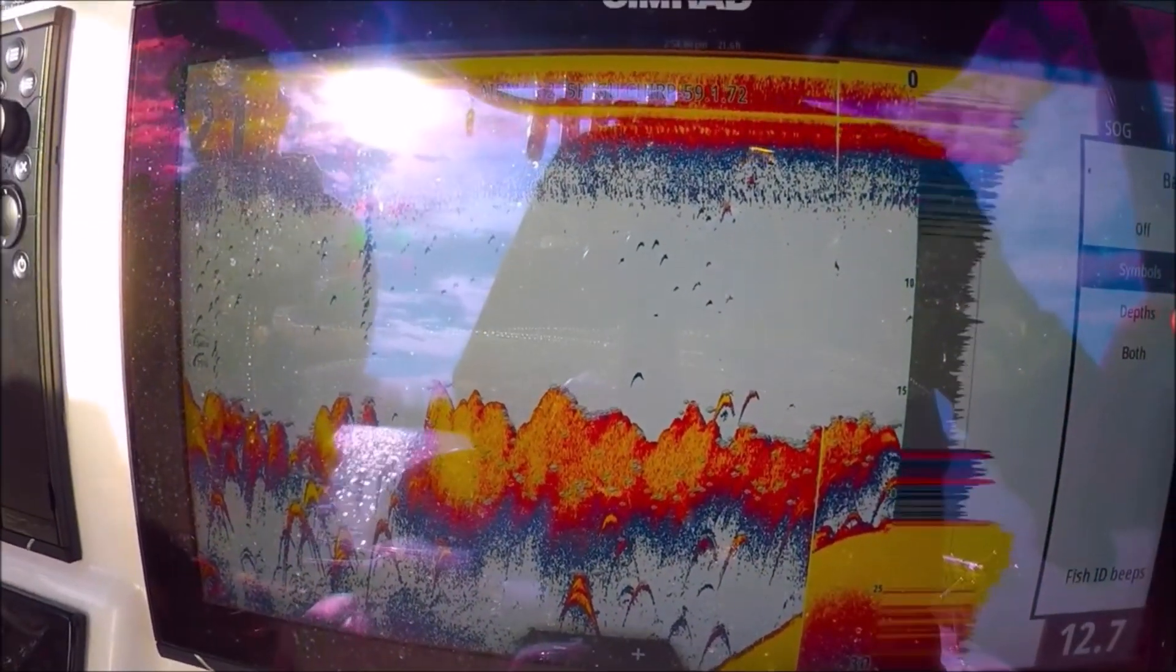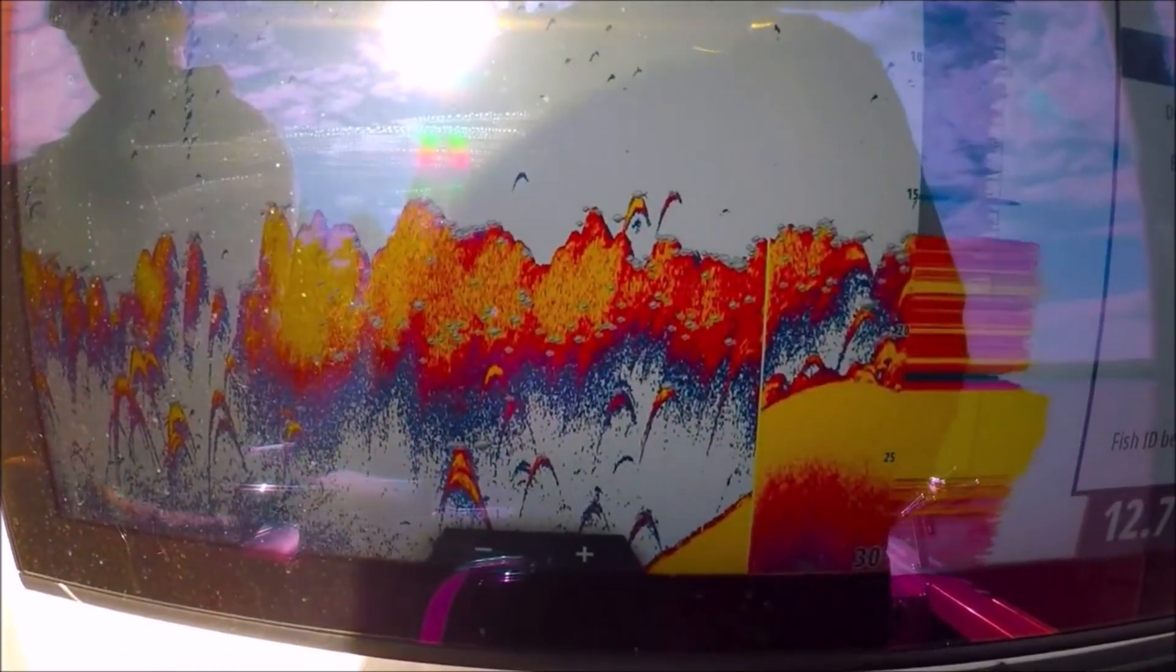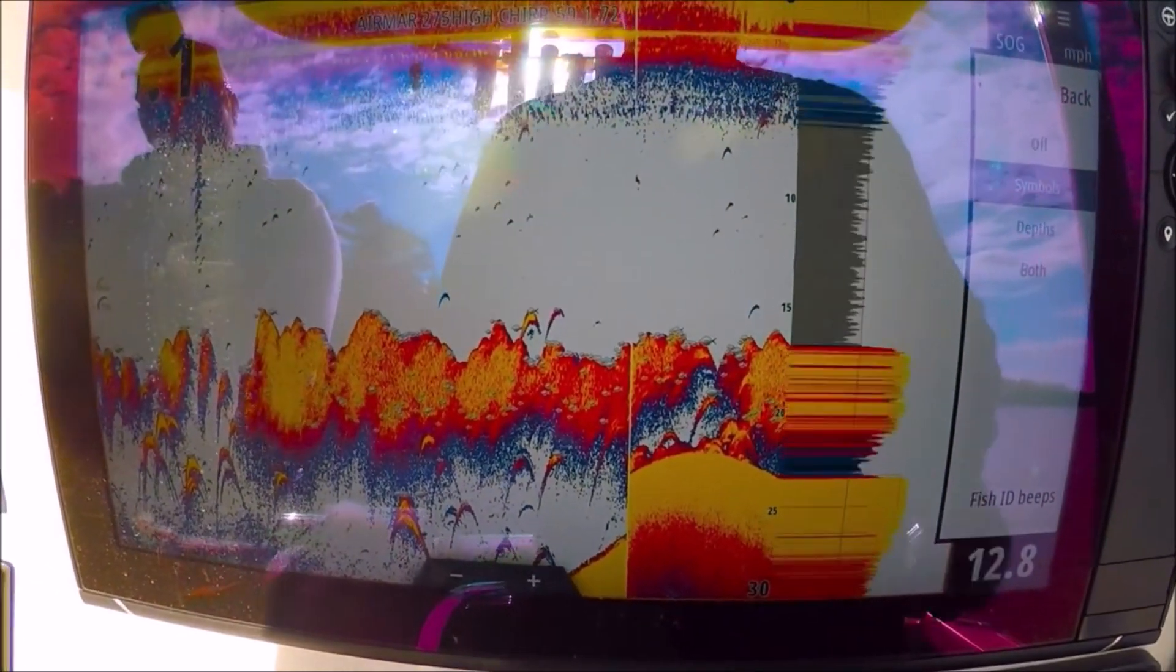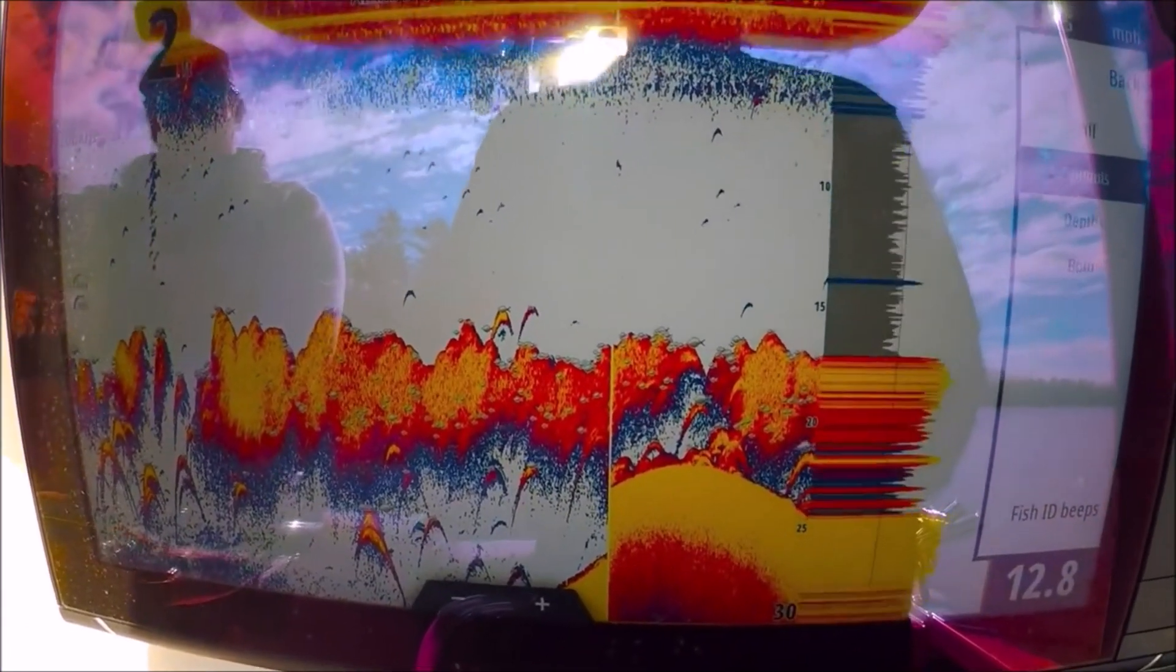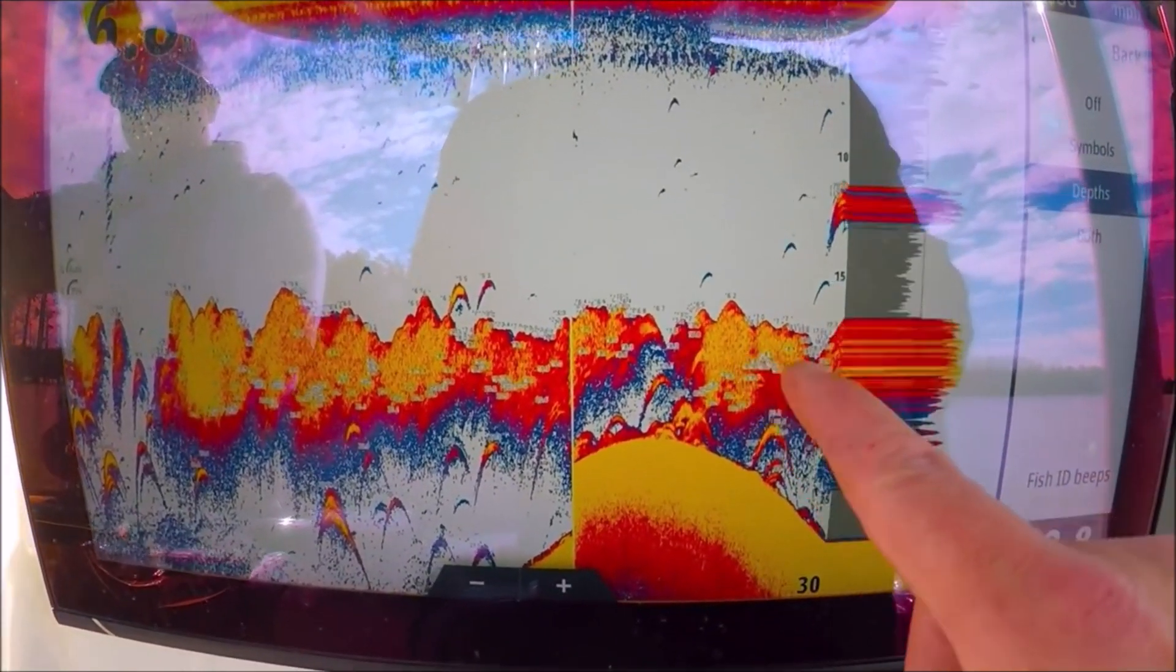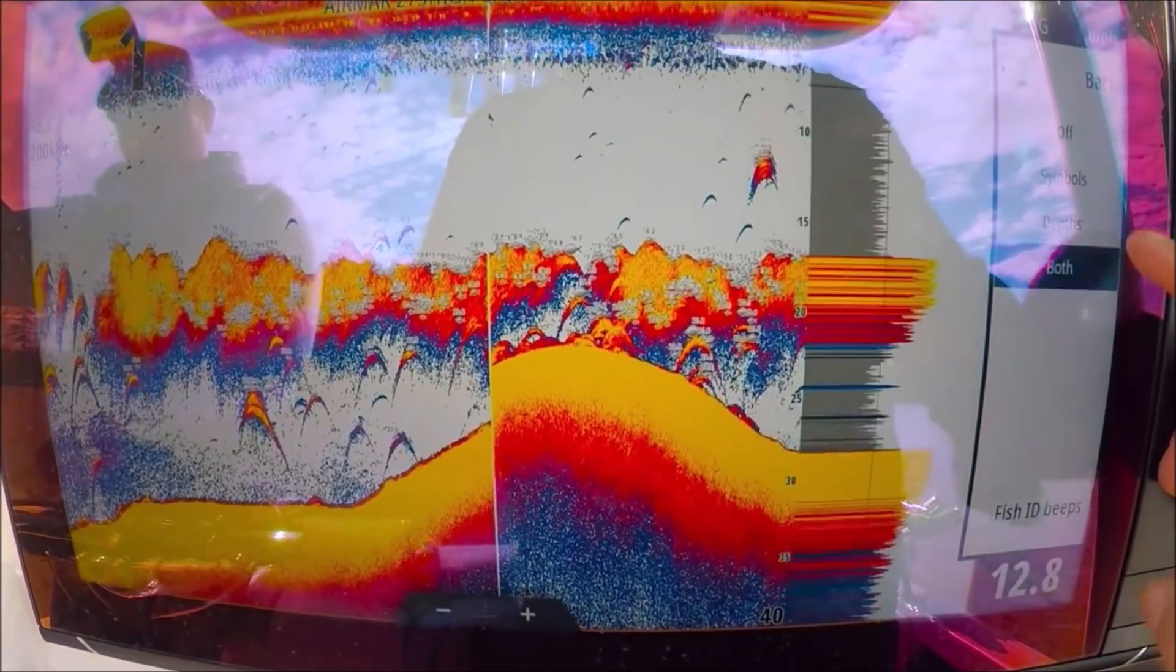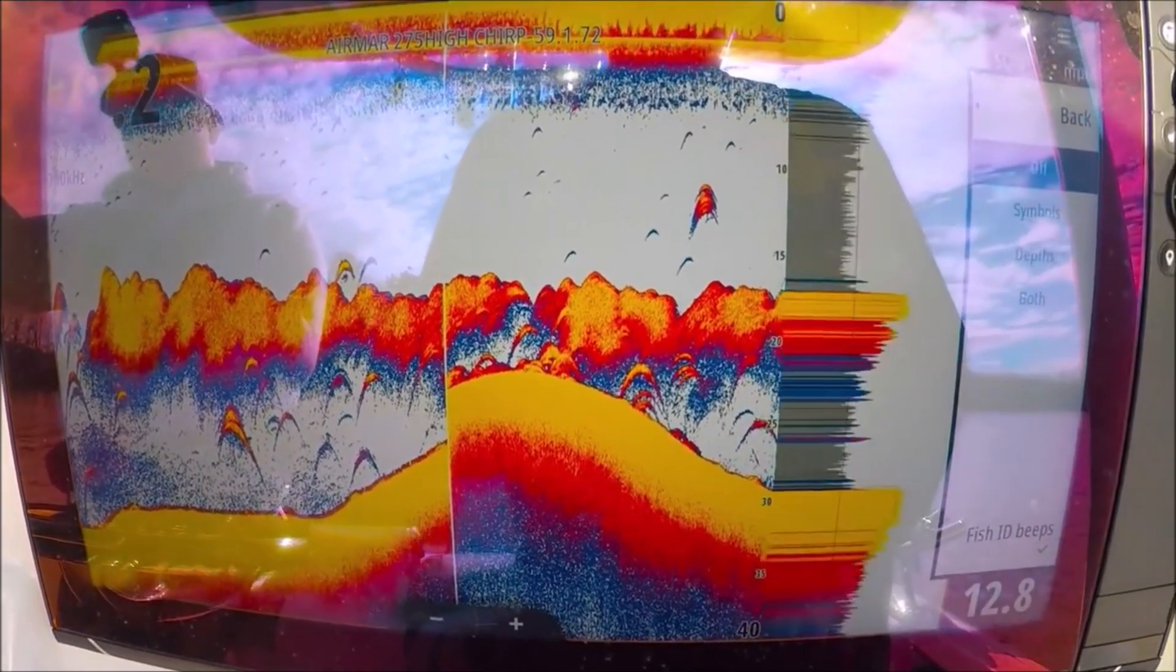Symbols, little fish symbols. You don't need that. Depth just puts a depth number at each mark. The symbols show the little fish here, symbols, but you don't need that really. Depth, you can see each return will have a number for the depth. Both is the fish symbols and the numbers. Let's turn that back off.